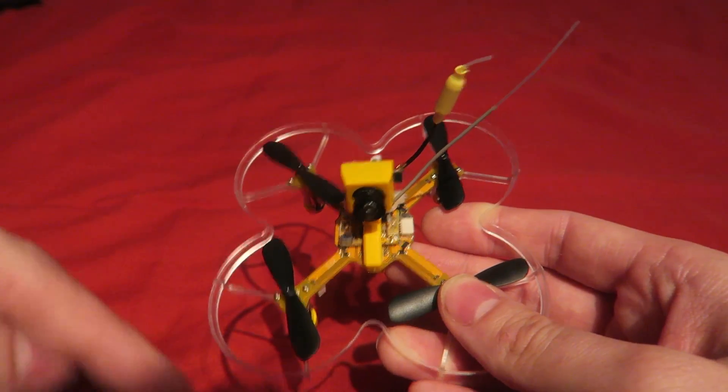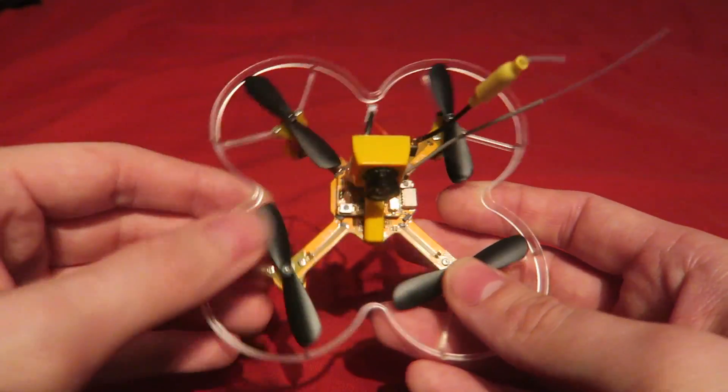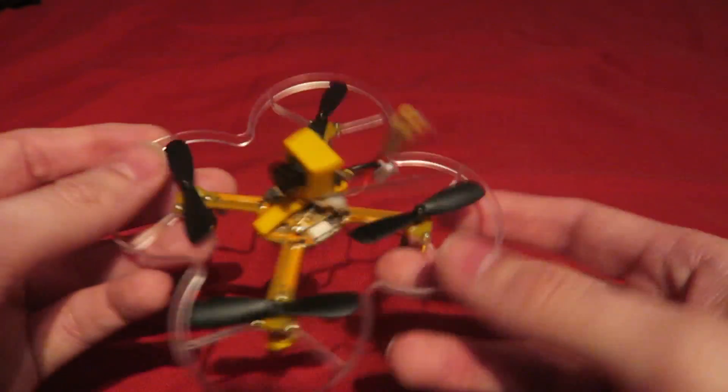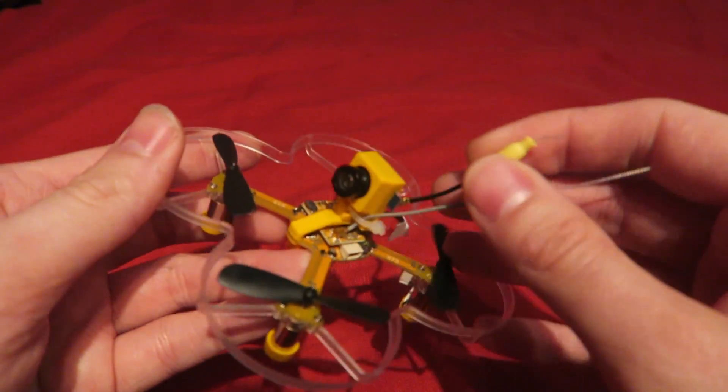I do think you can put D8 mode on all of the Taranises by updating the OpenTX software and firmware however my Taranis works because it's quite old now but yeah be aware of that. You can see there that the receiver does have a detachable antenna there.